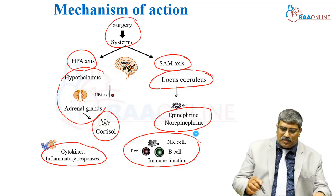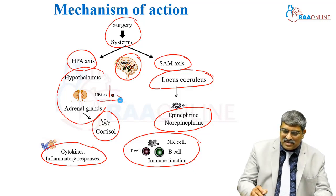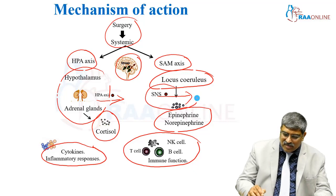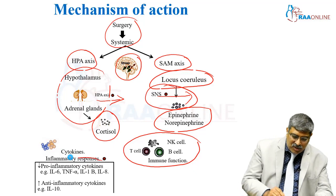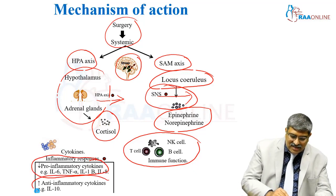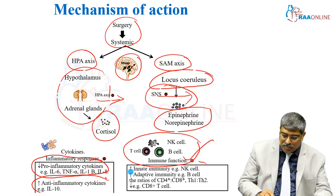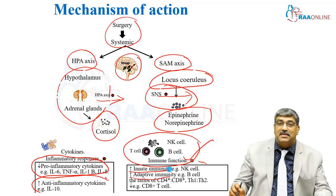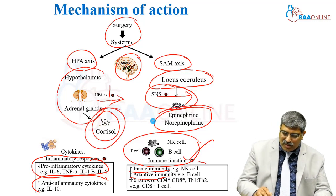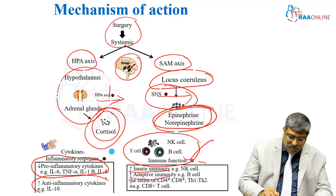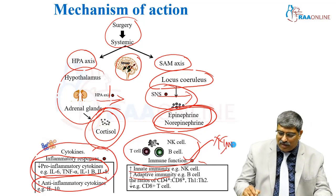By giving dexmedetomidine, you are stimulating the alpha-2 receptor, suppressing the HPA axis, suppressing the sympathetic nervous system axis, and reducing the inflammatory response. Pro-inflammatory cytokines are decreased and anti-inflammatory cytokines are increased. It also improves immune function, enhancing both innate and adaptive immunity. So with dexmedetomidine, you reduce cortisol, reduce norepinephrine and epinephrine, reduce inflammatory mediators, and improve immune function.